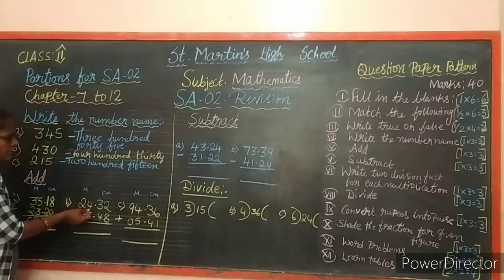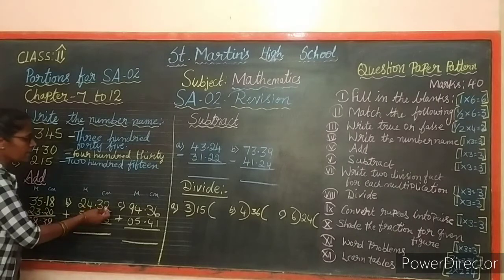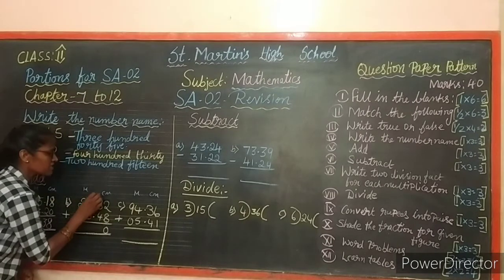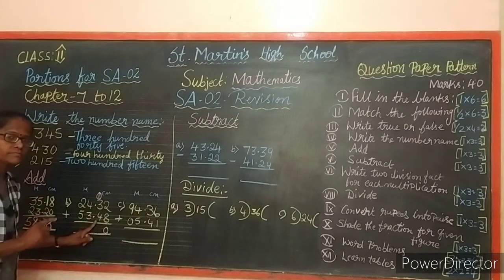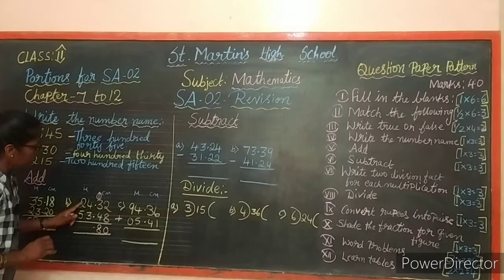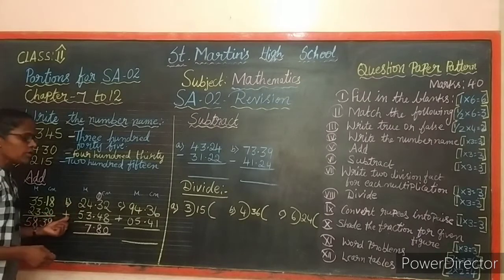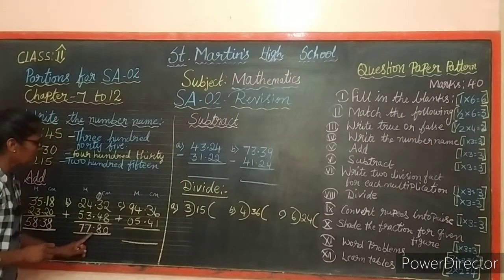Second sum: 24 meters 32 centimeters plus 53 meters 48 centimeters. Ones place: 2 plus 8 equals 10, write 0 carry 1. Then 1 plus 3 plus 4 equals 8. Keep a full stop. Meters: 4 plus 3 equals 7, and 2 plus 5 equals 7. The answer is 77 meters 80 centimeters.